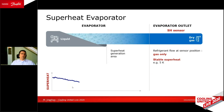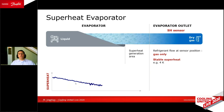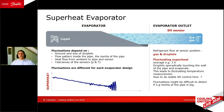Now we reduce the superheat and see it going down. We still have enough superheat generation area to produce dry gas, and the gas leaves the evaporator with a superheat of, let's say, 4 Kelvin. If we reduce even further, the refrigerant leaving the evaporator becomes a mixture of gas and some droplets. Those droplets hit the wall of the pipe leaving the evaporator and evaporate there.